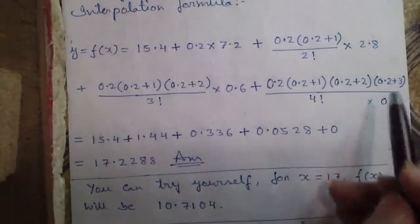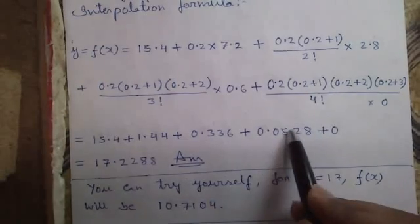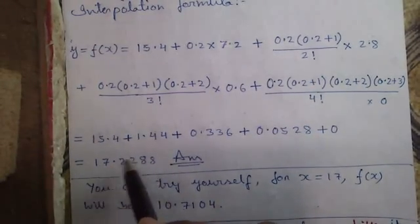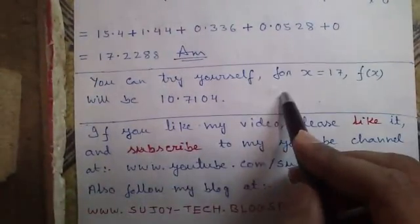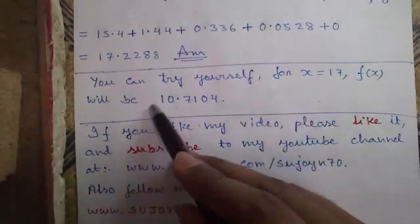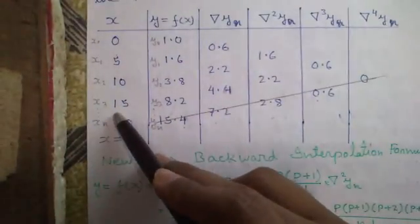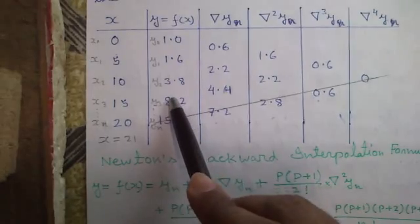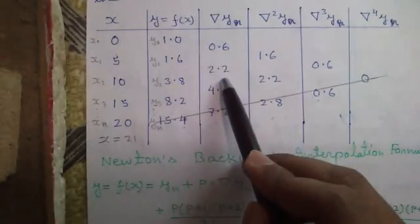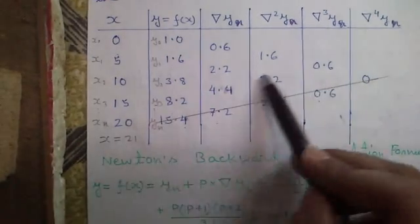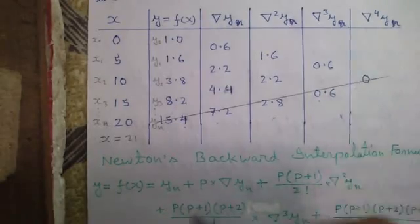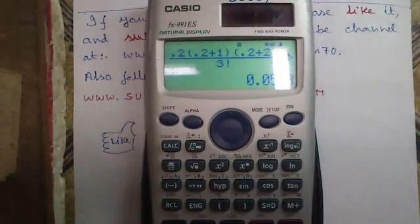Since ∇⁴y_n is 0, that term contributes nothing. Adding up all the values gives the answer: 17.2288. You can try another question yourself: for x equal to 17, f(x) will be 10.7104. For x = 17, x_n = 15, y_n = 8.2, ∇y_n = 4.4, ∇²y_n = 2.2, ∇³y_n = 0.6, and ∇⁴y_n = 0, so that term is not needed.